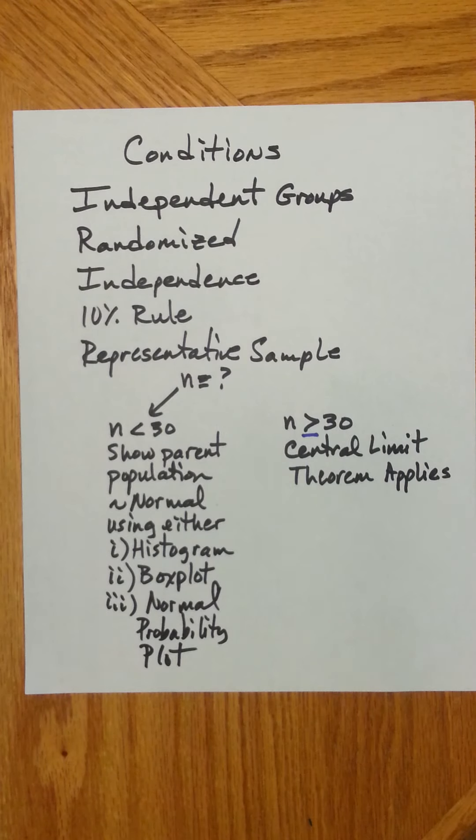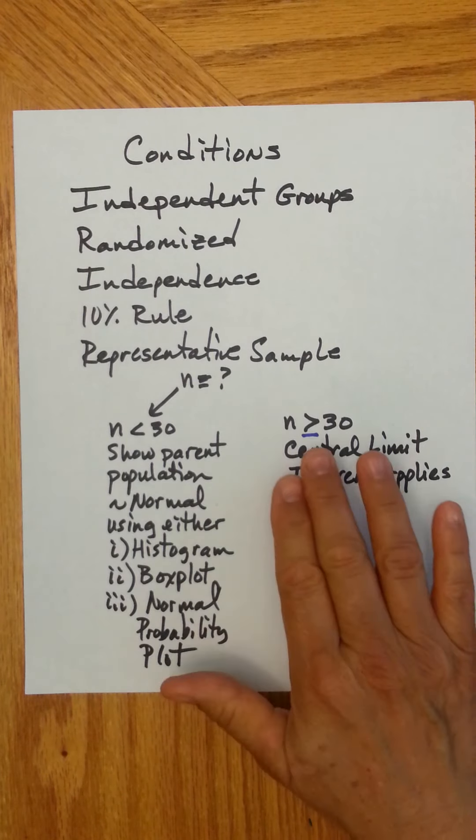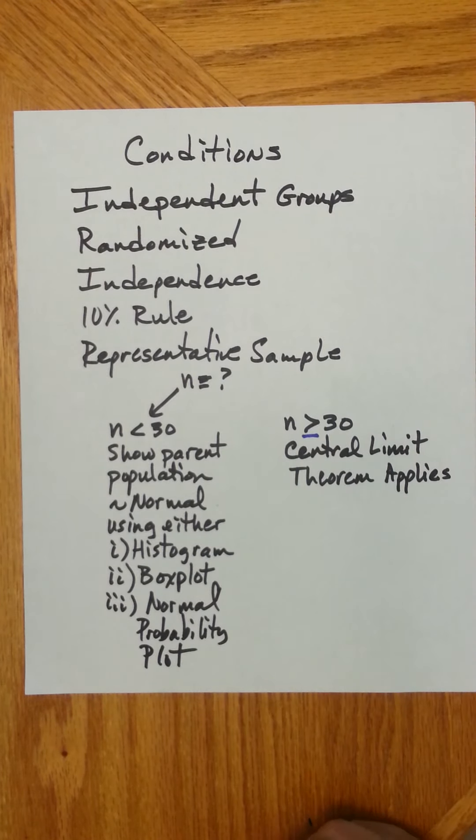then you must show that the parent population is approximately normal. You can use three tools for this: a histogram, box plot, or a normal probability plot. If your sample size is greater than or equal to 30, then the central limit theorem applies, and you'll already know that the distribution of the difference in the sample means will be approximately normal.